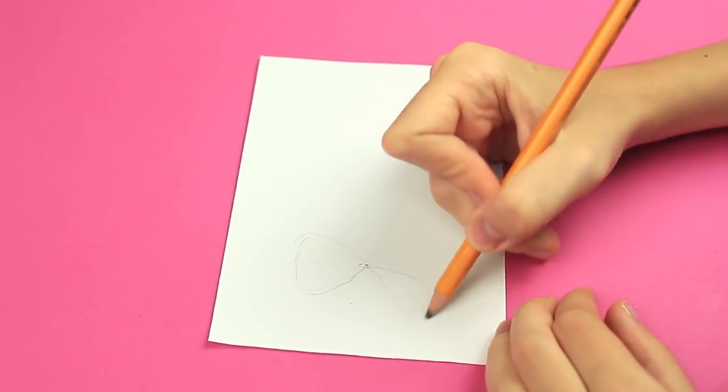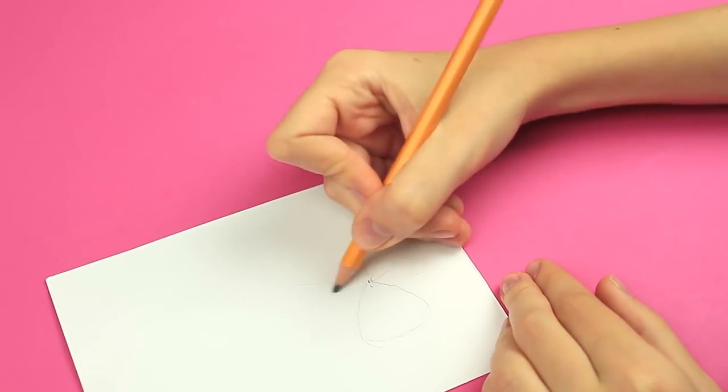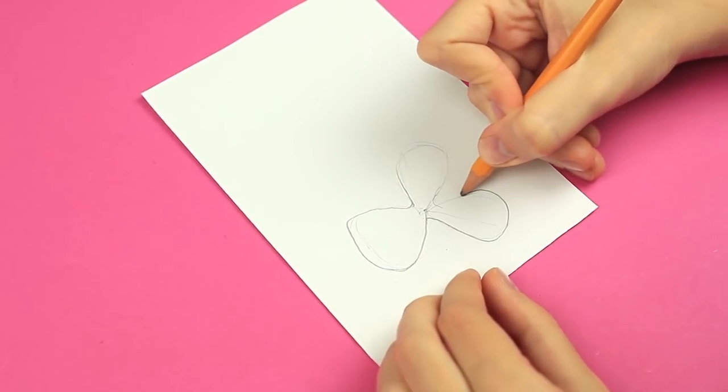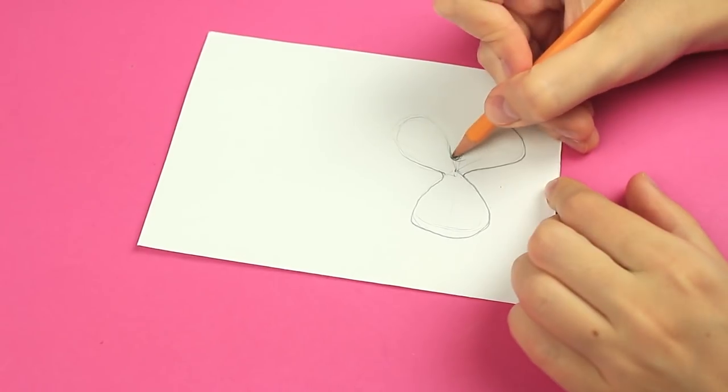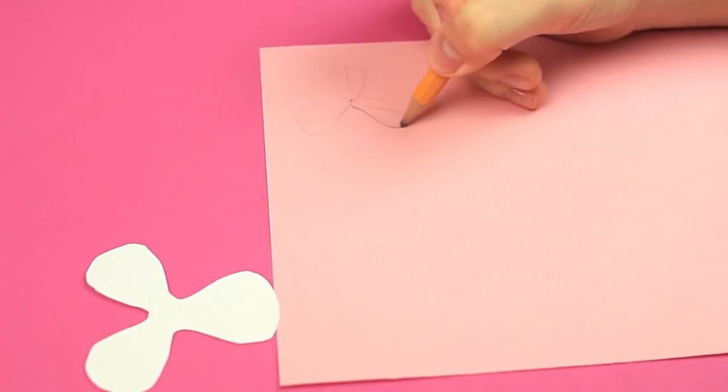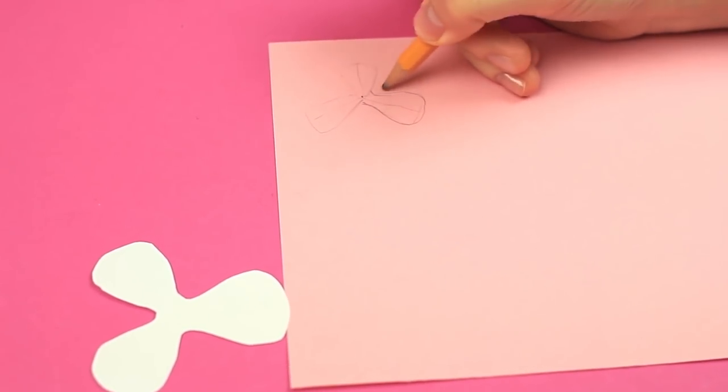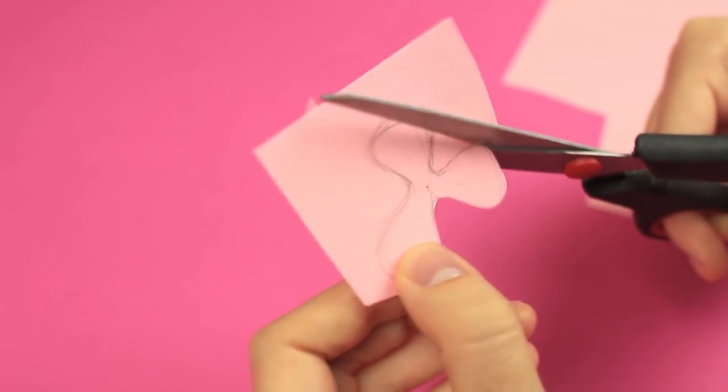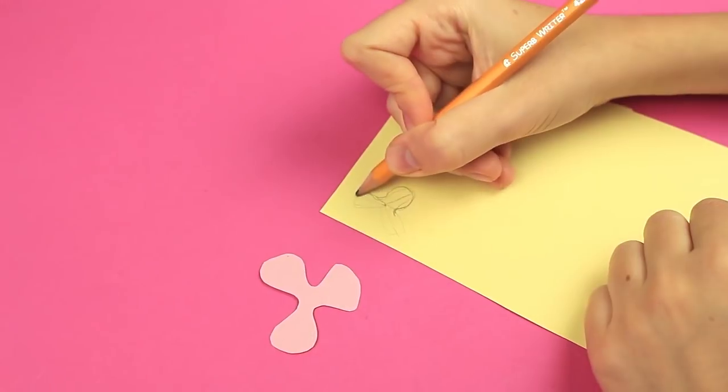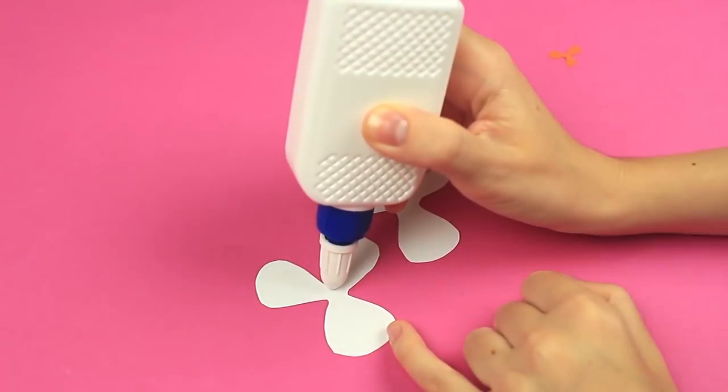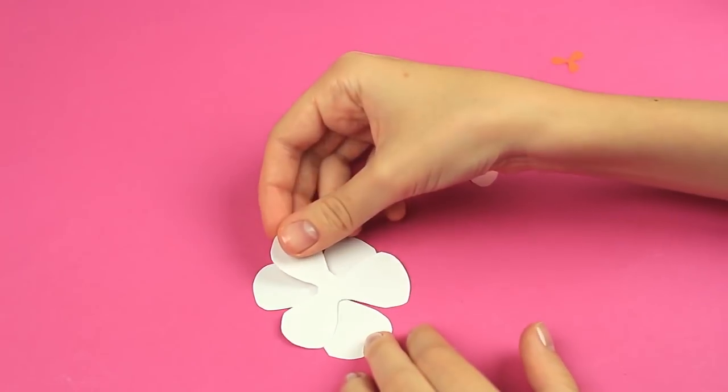Now, let's make statement layered flowers. Draw the lower layer first. Its petals are the biggest. Reduce further petals in size using different colors each time. Let's assemble the flower using the white glue.